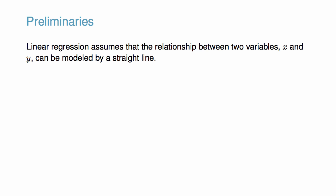Most importantly, linear regression assumes that the relationship between two variables, x and y, can be modeled by a straight line. Imagine what a perfect linear relationship would mean. You would know the exact value of y just by knowing the value of x.